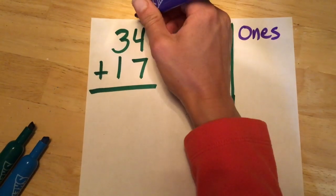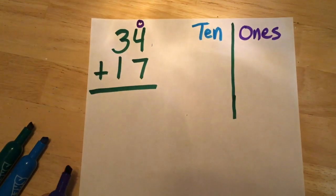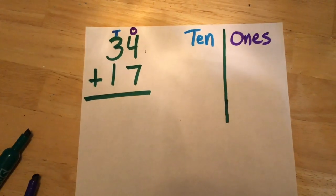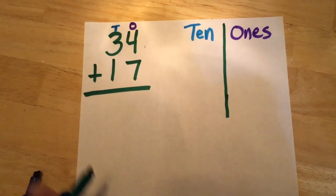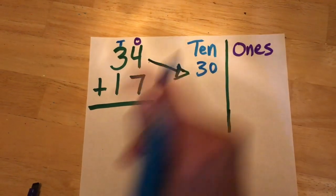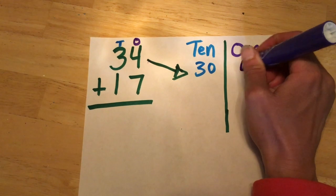First we'll start in the ones, then the tens. Now let's break apart the number 34. We have three tens, so that's 30, plus four ones.